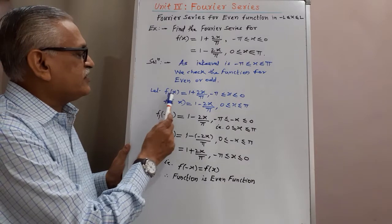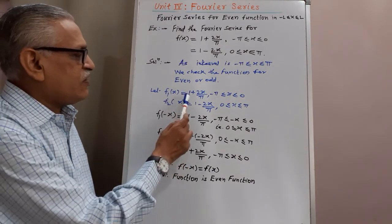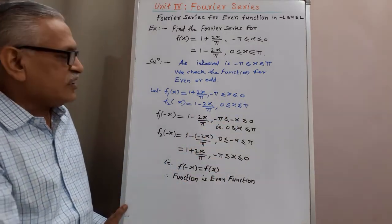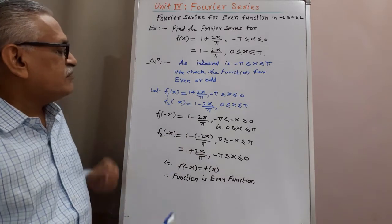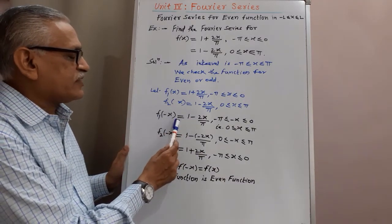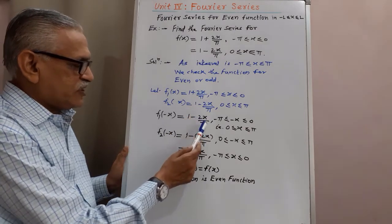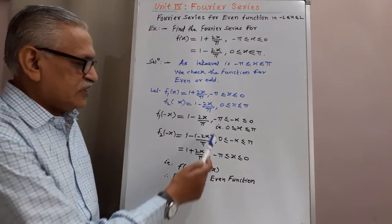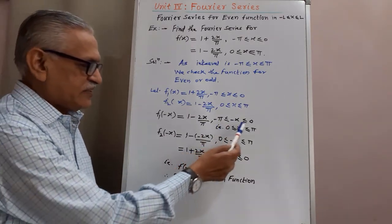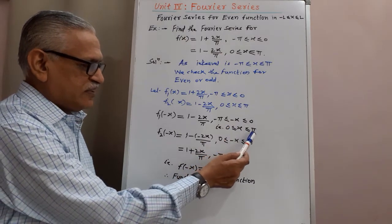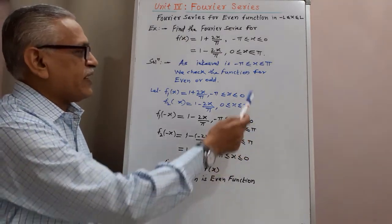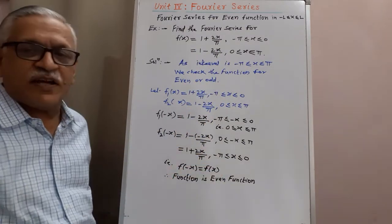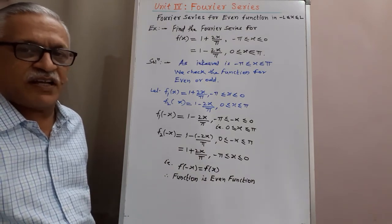Let us consider the first function f₁(x) = 1 + 2x/π for −π ≤ x ≤ 0. Replacing x by −x, we get f₁(−x) = 1 − 2x/π for −π ≤ −x ≤ 0. Multiplying by minus sign, we get 0 ≤ x ≤ π. The original value in 0 to π is 1 − 2x/π, and we are getting the same value 1 − 2x/π after replacing x by −x.